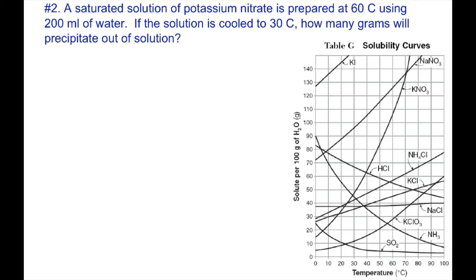Next, question 2: a saturated solution of potassium nitrate — KNO3 — is prepared at 60 degrees C using 200 mL of water. If the solution is cooled to 30 degrees, how many grams precipitate out? When you cool a saturated solution, you get recrystallization — solid forms, that's our precipitate. We first identify KNO3 on the graph and keep an eye on it among all the lines.